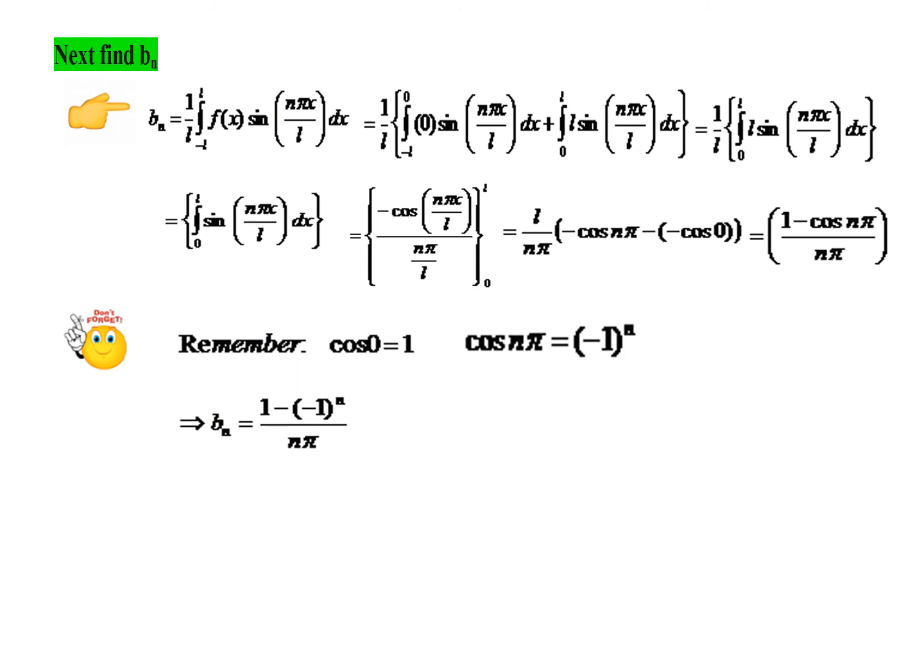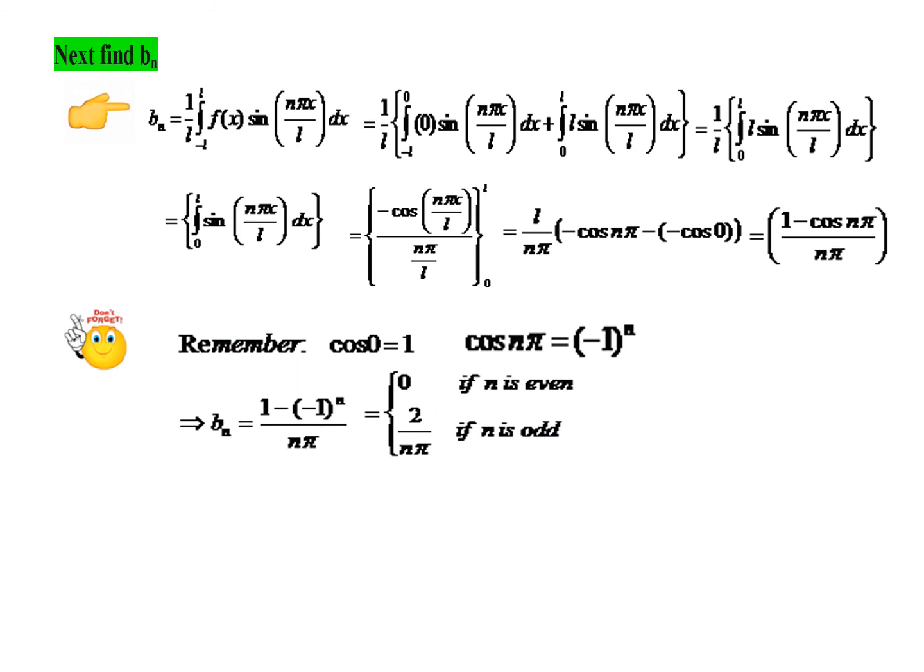The term 1 − (−1)ⁿ is peculiar: it equals 0 for even integers n and 2 for odd integers n. So Bₙ = 0 whenever n is even, and Bₙ = 2/(nπ) whenever n is odd.